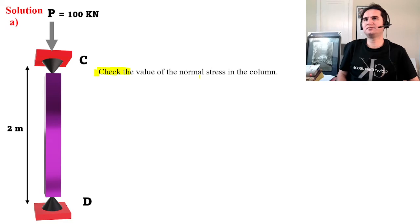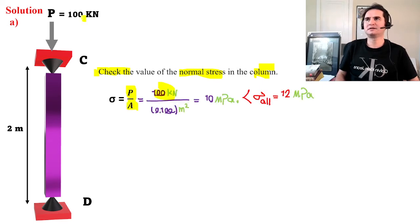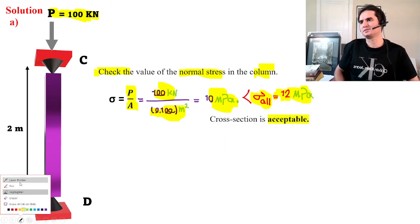For checking the value of normal stress of our column, we can simply divide the force over the area. So 100 kN, the original force, over the cross-sectional area is 10 megapascals, which is below our acceptable or allowable sigma stress. So that's an acceptable section design—our cross-section is acceptable.